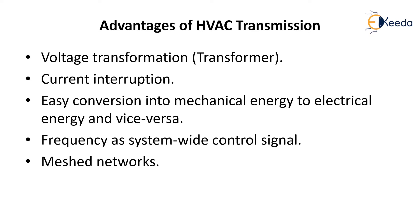The second advantage is current interruption, which is easy in HVAC transmission with the help of circuit breakers and other advancements. Third is easy conversion of mechanical energy to electrical energy and vice versa — this is why AC generation is always preferred. Converting to DC form is somewhat complex and less economical. The next advantage is frequency, which serves as a system-wide control signal. If frequency is maintained, other factors have less effect. Finally, AC systems can be used in mesh networks.